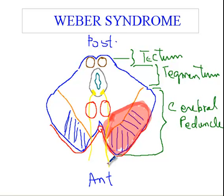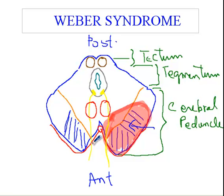With the ipsilateral third nerve palsy, you will have ptosis, the eye would be deviated outwards, and the pupil will be dilated. Second, you have the corticospinal tracts involved here, which will give you contralateral hemiparesis including the lower half of the face. So the patient has ipsilateral third nerve palsy and contralateral weakness of the face, arm, and leg.